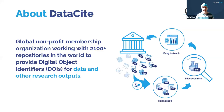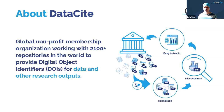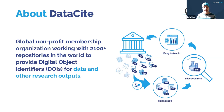Datacite is a global non-profit membership organization that works with over 2,100 repositories in the world to provide Digital Object Identifiers — DOIs — for research data and other research outputs. If your institution has research outputs, you can assign DOIs to things like data, software, text publications, or even samples. You can then connect those research outputs via these DOIs, interlink them, cite them, and refer to them, making them more discoverable in large databases and research discovery systems such as Datacite Commons and Google Scholar.